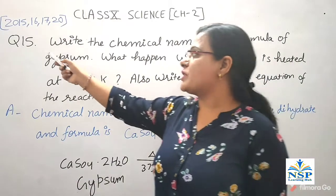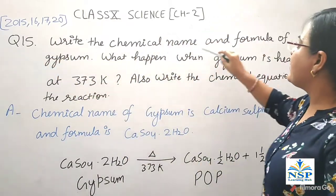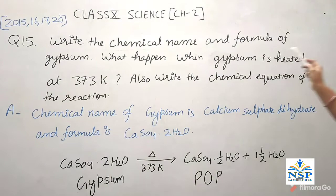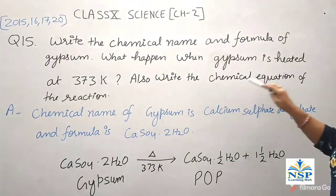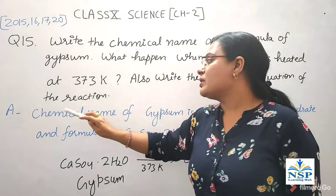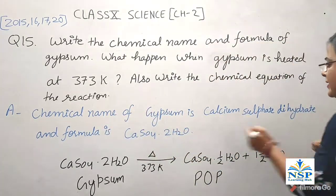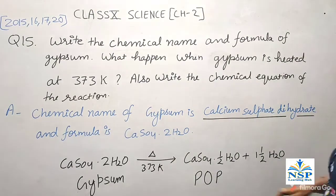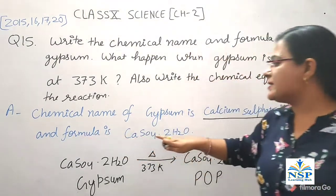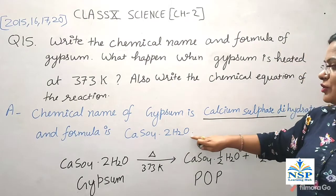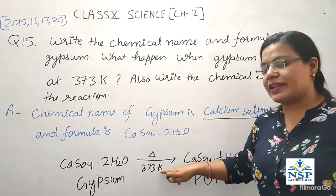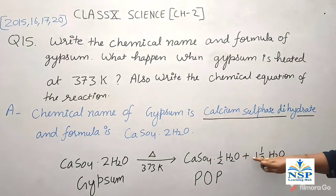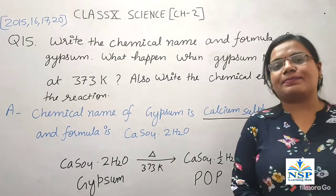Question number 15: Write the chemical name and formula of gypsum. What happens when gypsum is heated at 373 Kelvin? Also write the chemical equation of the reaction. The chemical name of gypsum is calcium sulfate dihydrate and the formula is CaSO4·2H2O. When gypsum is heated at 373 Kelvin, it gives POP (Plaster of Paris) and water molecules are removed from the gypsum.